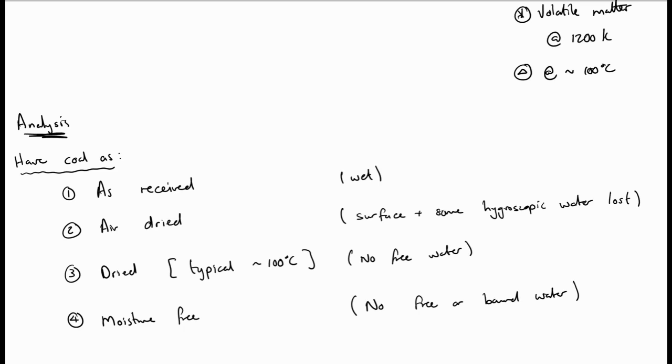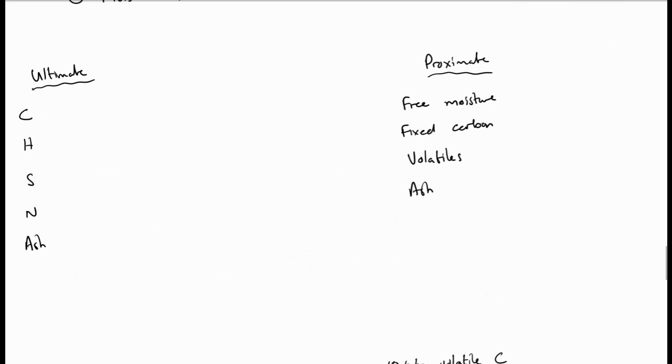We can now do our analysis, the following analysis, on any one of these four types of coal. This will typically be specified to you. Typically, two types of analysis are done on coal. The first being the ultimate analysis, which is typically an elemental analysis, and the second being proximate analysis, which is an approximate analysis of the coal.